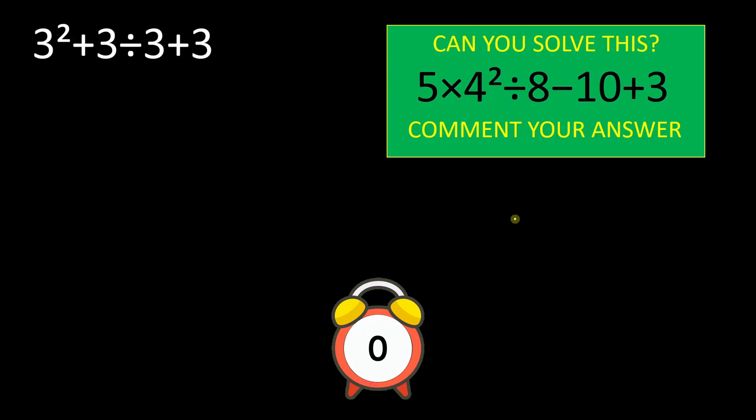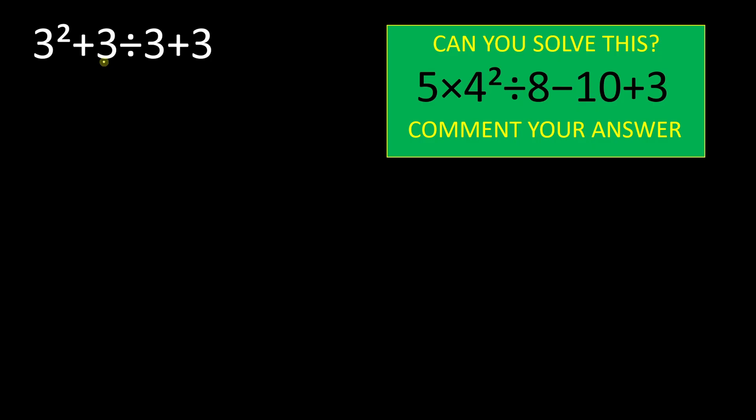Okay, time's up. Now we are going to solve this. We have 3² + 3 ÷ 3 + 3, like four threes. We will follow order of operation.